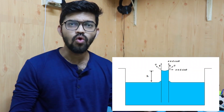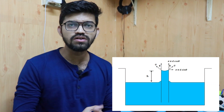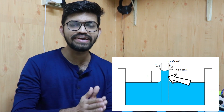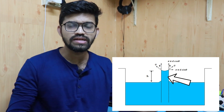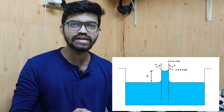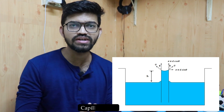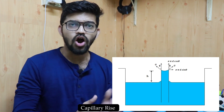Suppose we have a glass tube with a 6 mm diameter, open at both ends, and two pools — one of water and one of mercury. If we insert the glass tube into the water pool, water enters the glass tube and the level of water inside the tube will be higher than the adjacent water level in the pool. This effect is known as capillary rise.